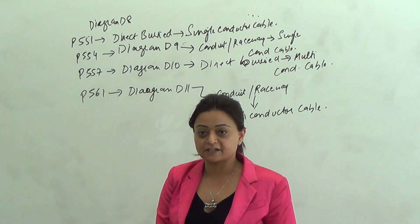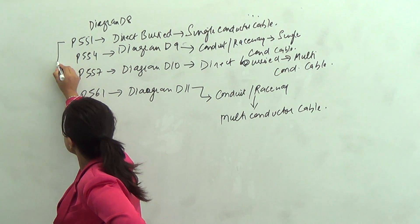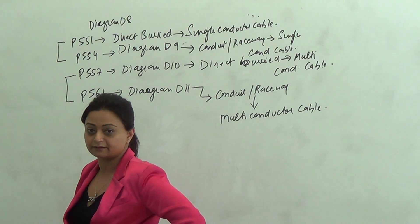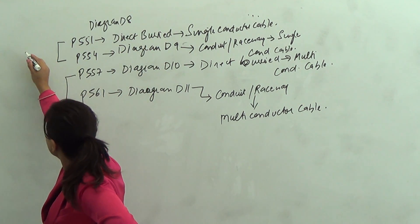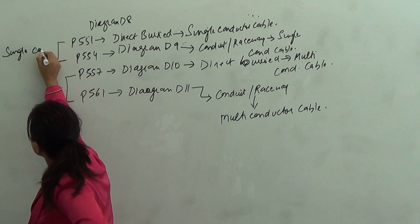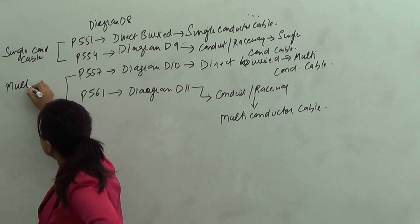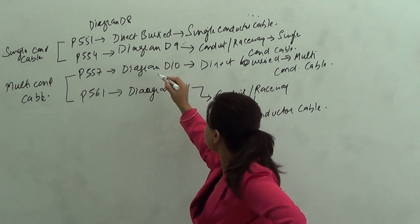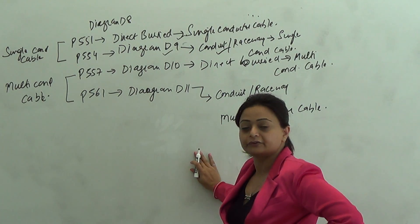Page 551, where we have our first diagram — if you guys want to make notes, make notes right on top of page 551 so you would not forget. This talks about anything to do with when the conductors are single conductor cable. On the bottom here it's all multi-conductor cable. Further, they are subdivided whether they are directly buried or they are in a conduit.